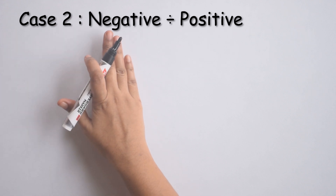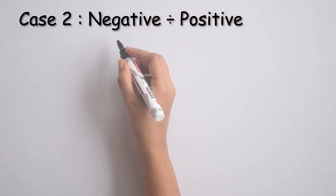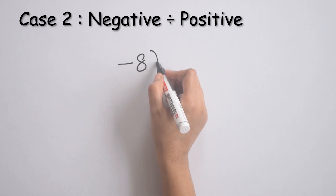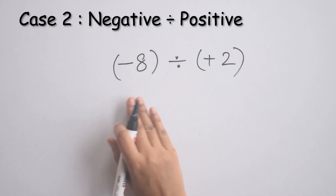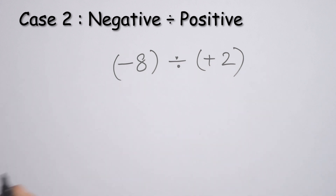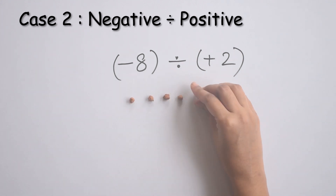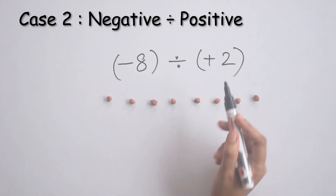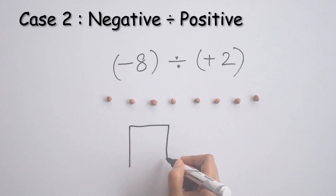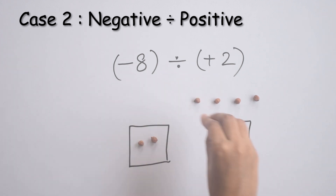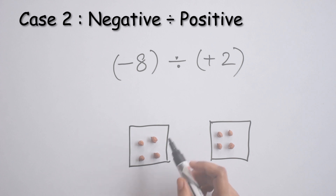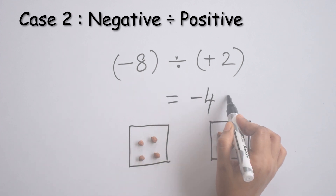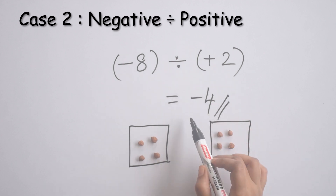Let's take the next case — negative integer divided by positive integer. For example, if we take negative 8 divided by positive 2. We can read this as negative 8 divided into two groups. Let's first represent negative 8, then draw two boxes and divide it into two groups. How many do we have in each group? We have 4, and since they are chickpeas, the symbol is negative. So, negative 8 divided by positive 2 is equal to negative 4.